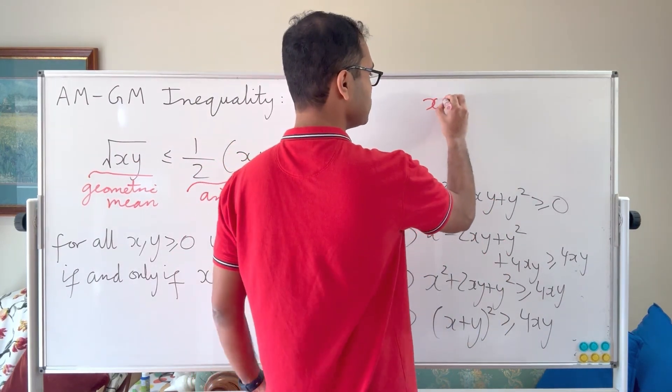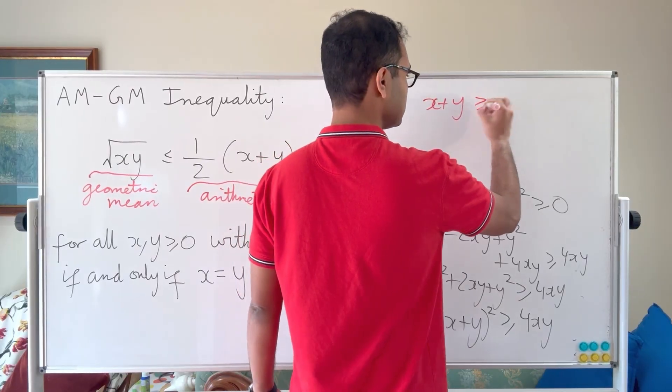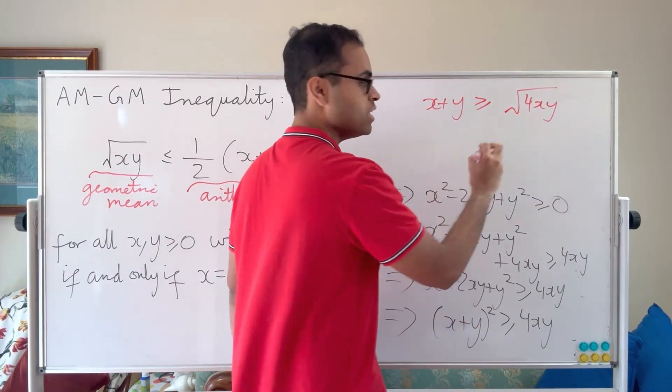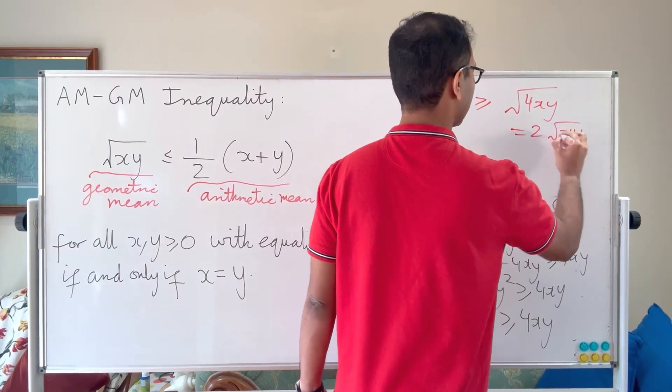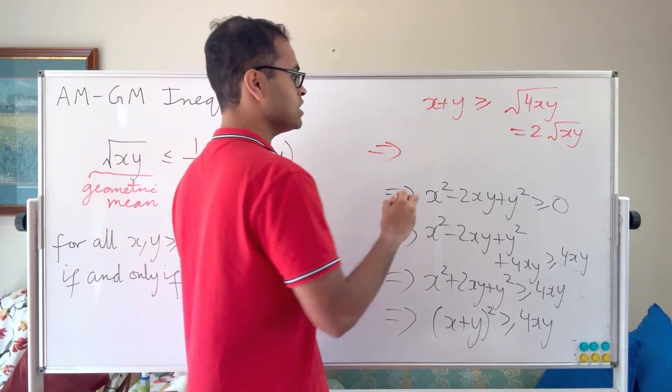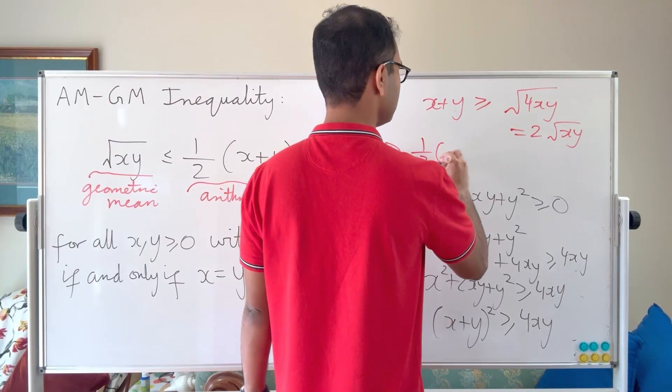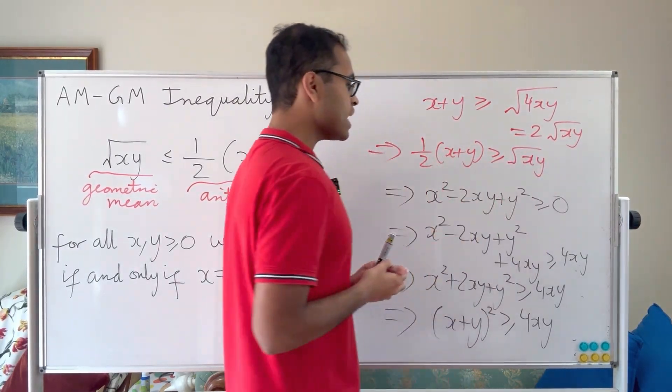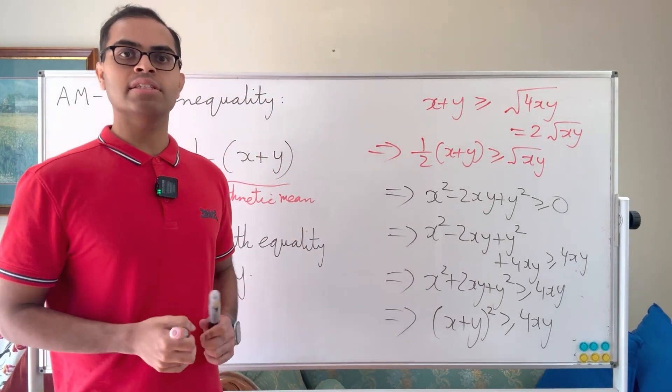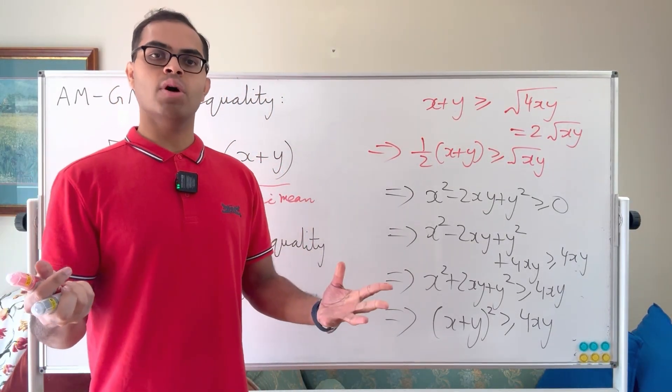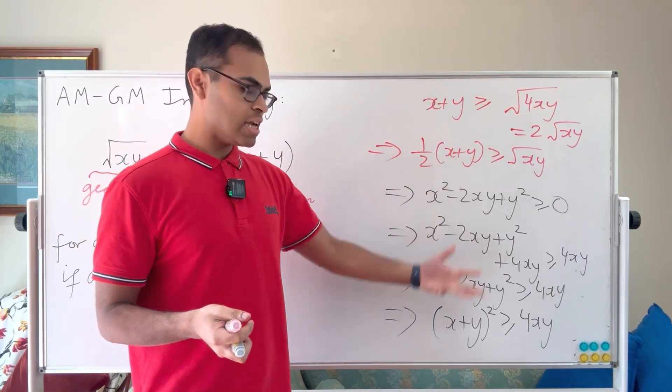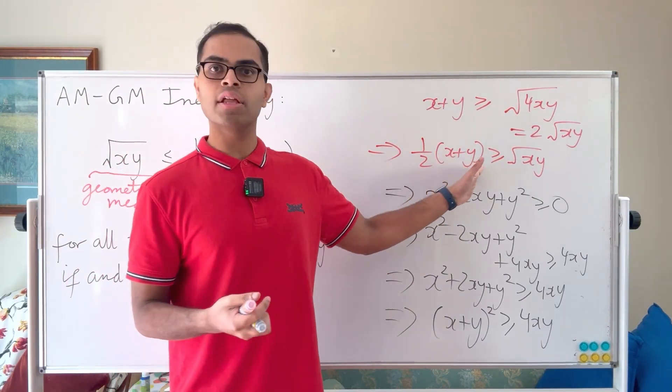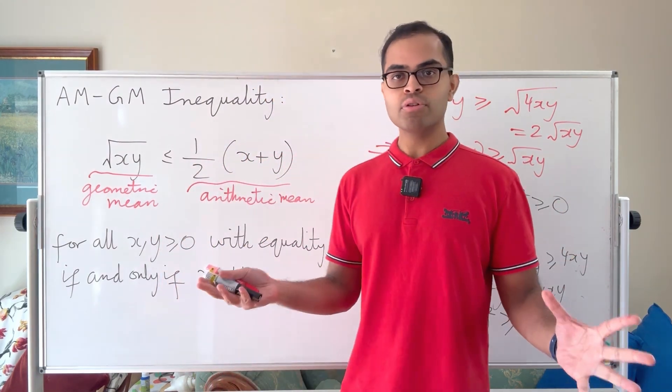Taking the square roots on both sides, we get x plus y is at least the square root of 4xy, which equals 2 times the square root of xy. Dividing both sides by 2, we get half times x plus y is at least the square root of xy. We know that equality holds precisely when x is y by the first inequality we started with. Every step of the way we just added a constant and took the square root, so equality would hold in the final inequality precisely when x is y.